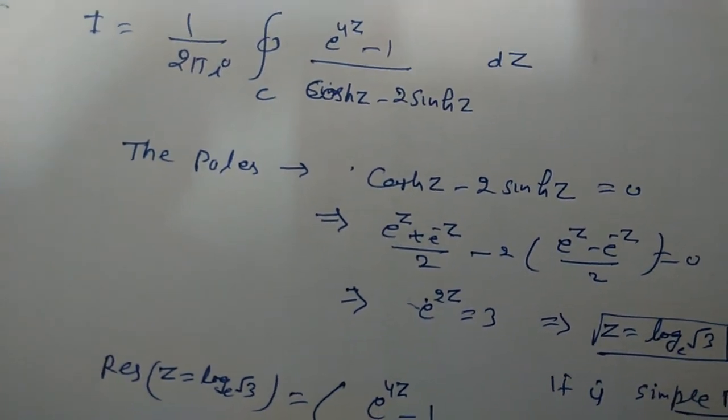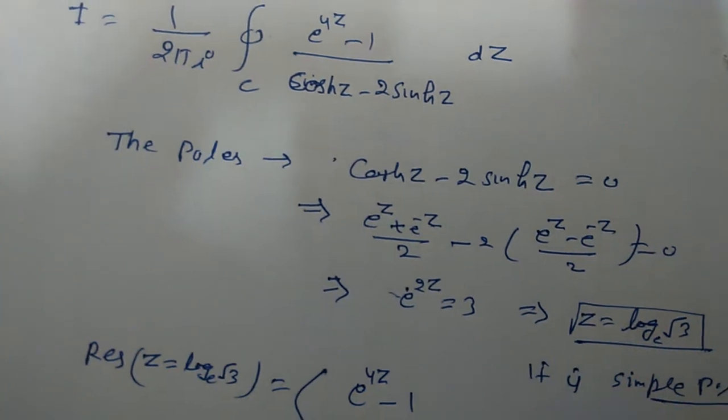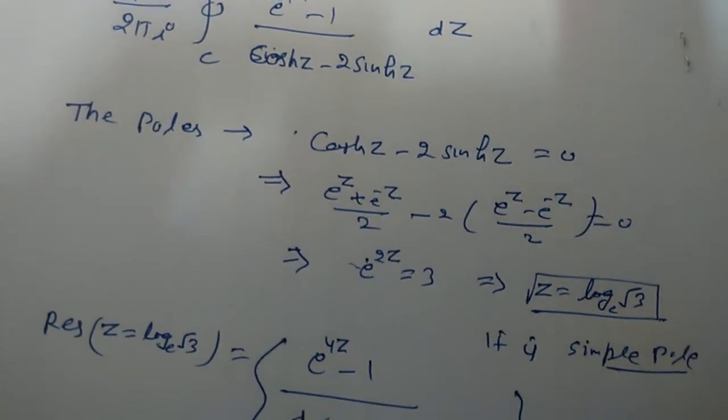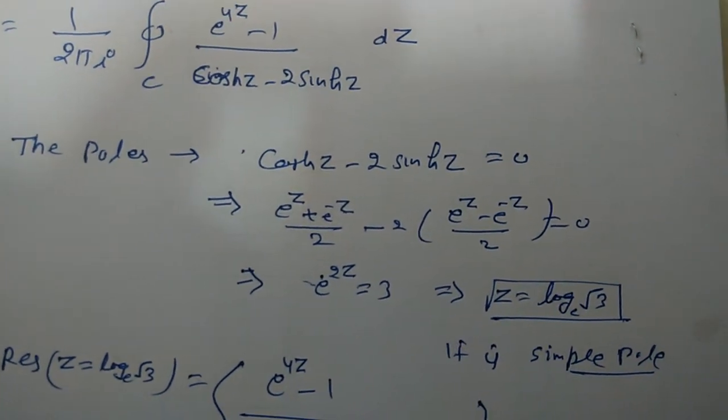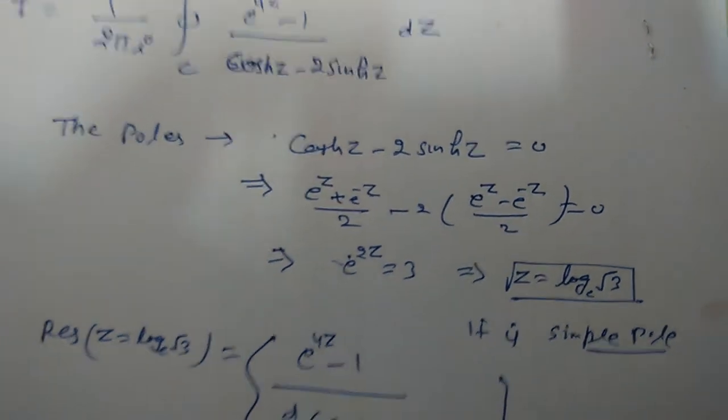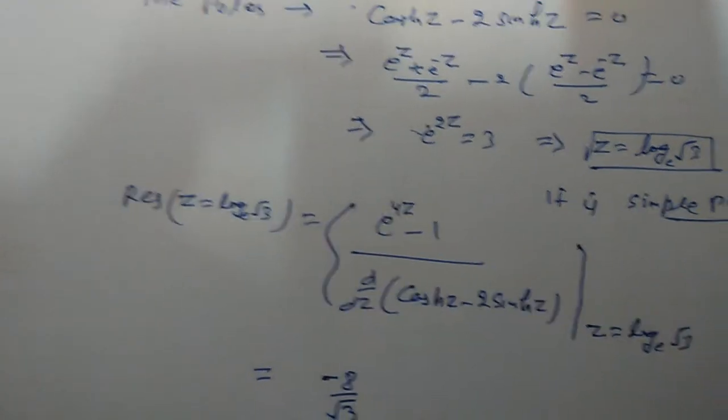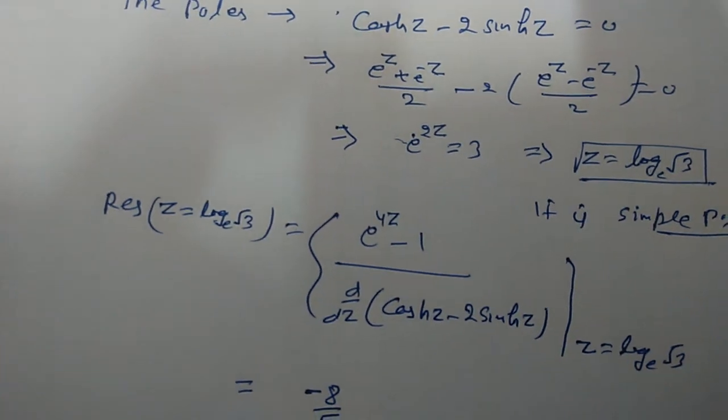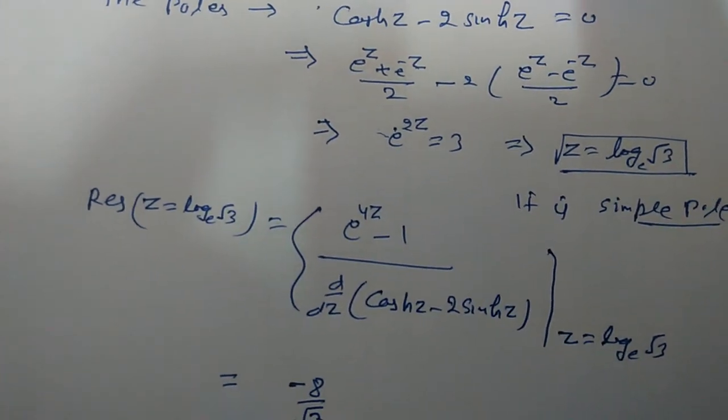So we get z is equal to log√3. It's a simple pole. Now we calculate the residue at z = log√3. We take e^(4z) - 1 in the numerator.